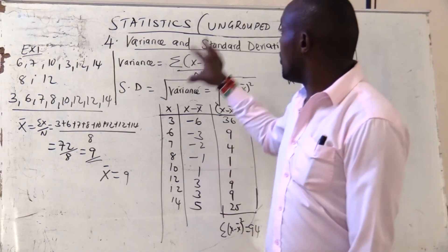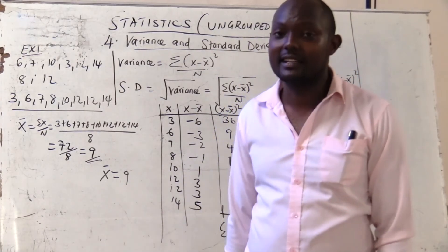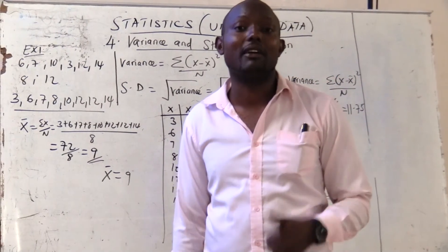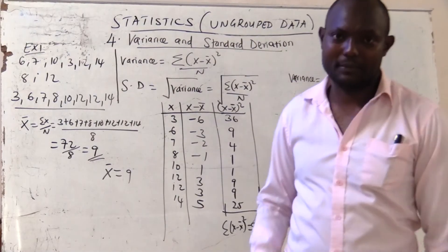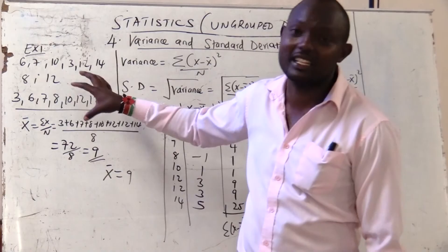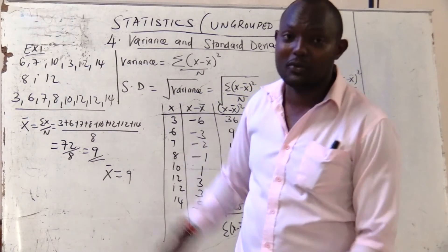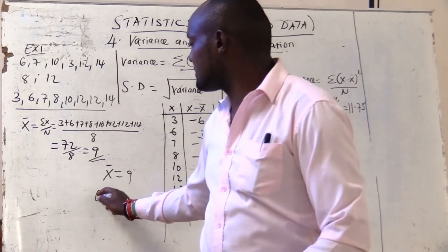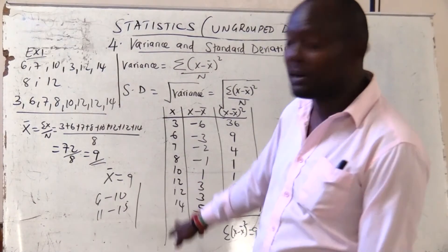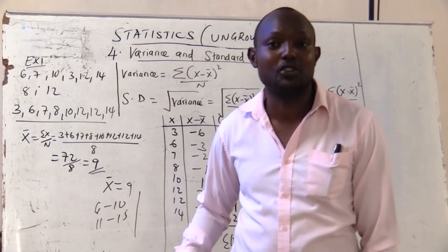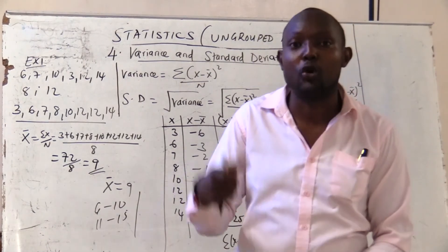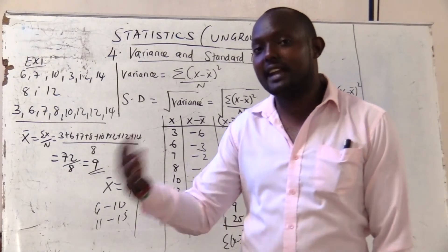That marks the end of our ungrouped data class for statistics. The next class — our fifth class on statistics — will look at grouped data. I will start by showing how to prepare a frequency distribution when given 40 data values, and then how to use that frequency distribution to calculate mean, mode, and median for grouped data.